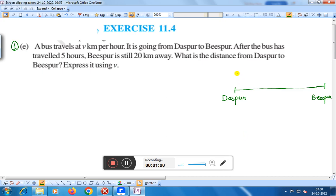After the bus has travelled 5 hours... the distance from Daspur will be... In one hour, the bus travels V km per hour.